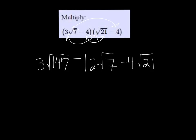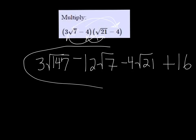And the last is going to be positive 16 — negative 4 times negative 4. And there aren't any like terms here. There's nothing we can reduce, so this is the answer.